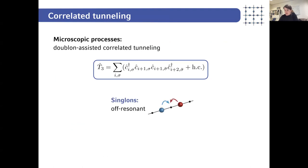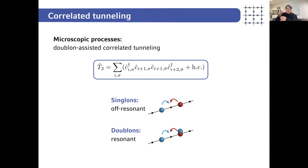This microscopic T3 process is off-resonant for singlons in the initial state since they must pay a Hubbard interaction energy U when hopping onto the intermediate site. However, if we add doublons to the initial state, this process can become resonant: a doublon on one side and an isolated singlon two sites away — when two fermions hop onto the intermediate site they pay U, but since there was also a doublon in the initial state, the number of doublons is conserved and the process is resonant. So the dynamics is highly dependent on the doublon fraction in the initial state.